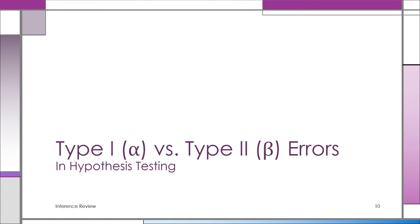Now we're going to use the sample evidence to do something different — we're going to test a claim. It's called hypothesis testing. Somebody makes a claim about a parameter — like a company might say the average life of its refrigerators is at least 10 years. We can test that claim with sample evidence to see if it's reasonable. This is what hypothesis testing is all about.